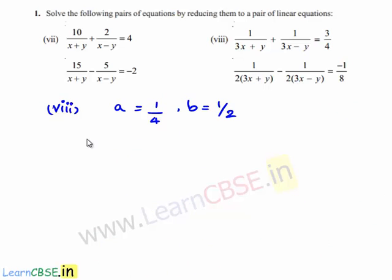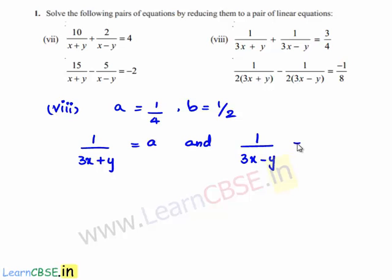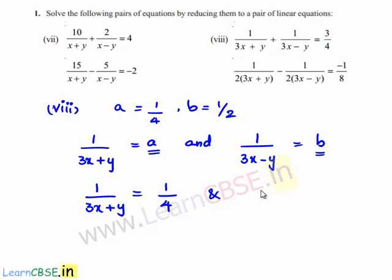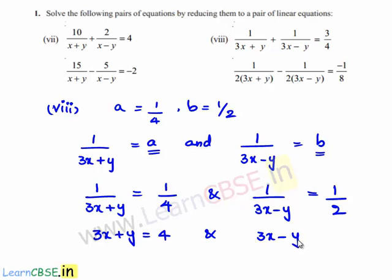Since we assumed 1/(3x+y) = a and 1/(3x-y) = b, substituting back with a = 1/4 and b = 1/2 gives 1/(3x+y) = 1/4 and 1/(3x-y) = 1/2. On cross multiplication we get 3x + y = 4 and 3x - y = 2.